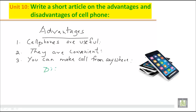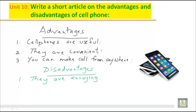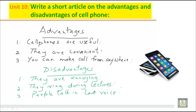Now let's look at the disadvantages of cell phones. Number one, they are annoying — many times when you want to sleep, take rest, or talk with family members, the phone rings and disturbs you. Number two, they ring during lectures; in classrooms mobile usage is prohibited, but when it rings it disturbs the whole class. Third disadvantage: people talk in a loud voice, especially at public places, without caring about others' privacy.